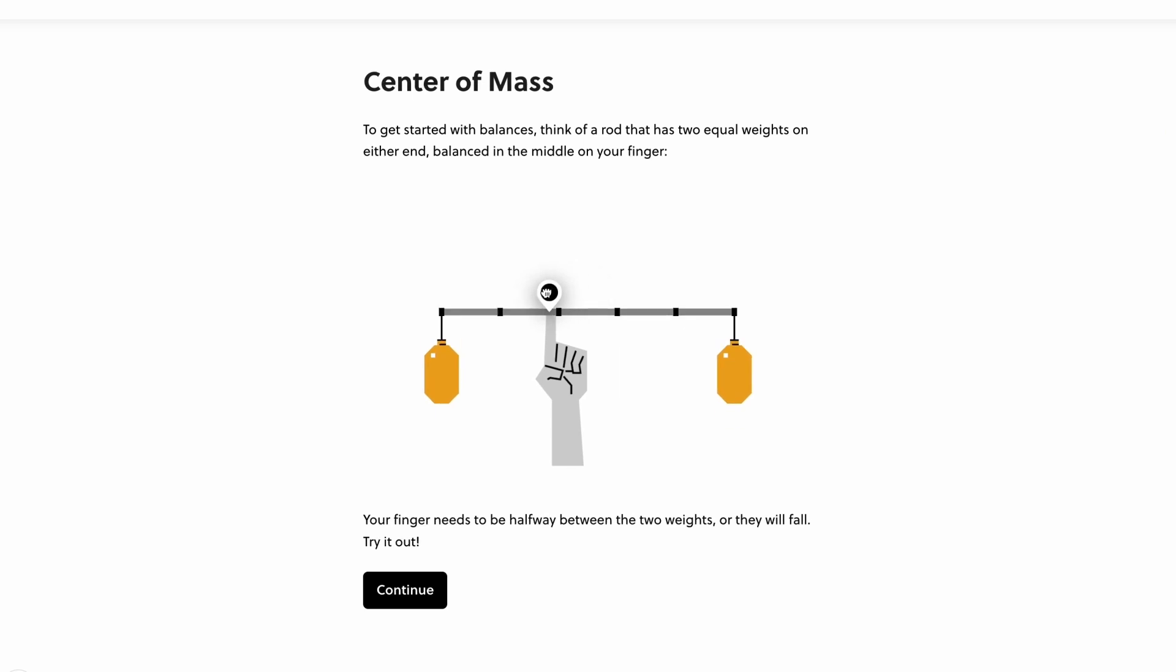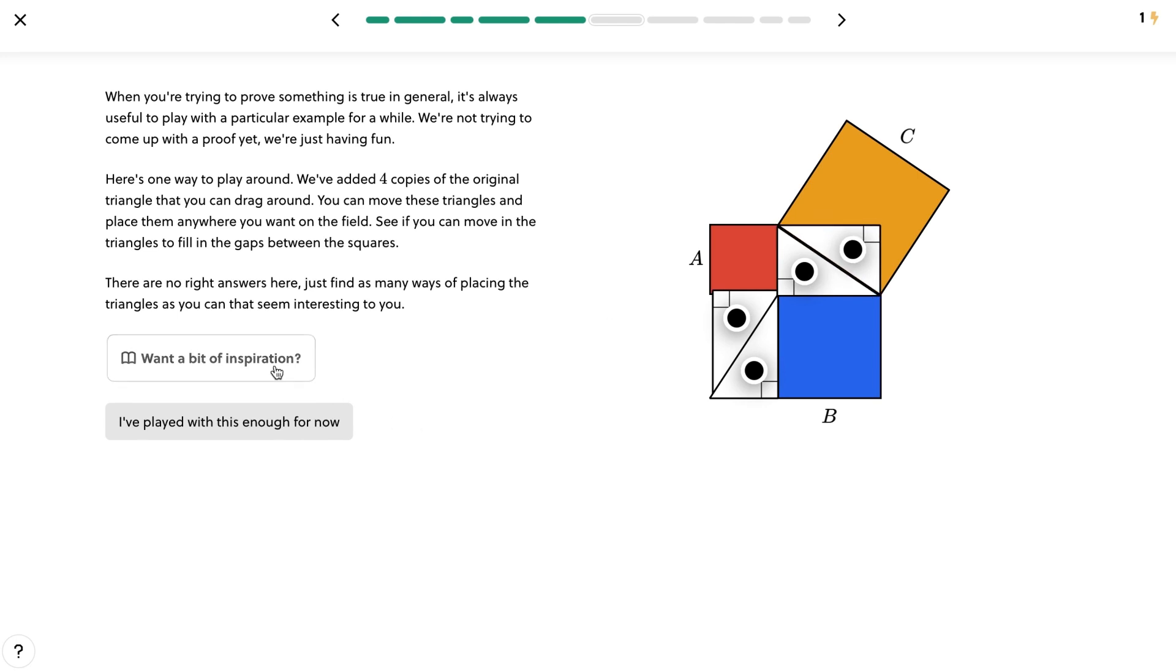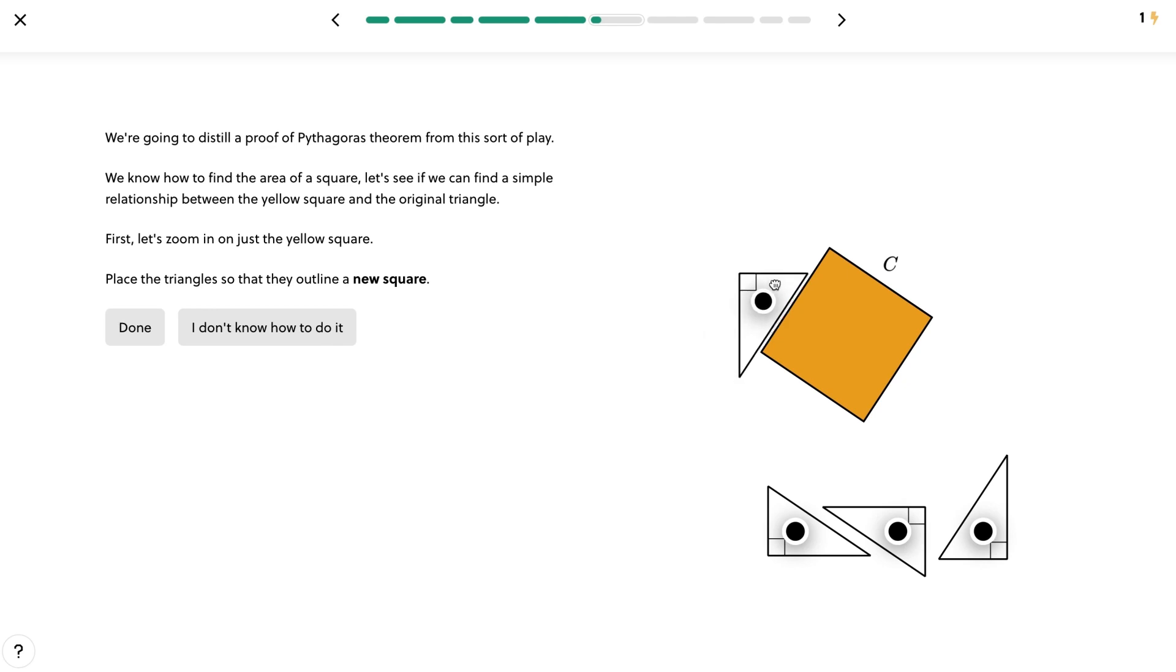They've recently taken the interactivity on their platform to a whole new level. Check out this example from the recently redesigned Mathematical Fundamentals course. You might remember the Pythagorean theorem from school, like what the formula is. But in this lesson, you're moving around triangles and actually proving that A squared plus B squared is equal to C squared. It's pretty cool. And there's a lot more where that came from.